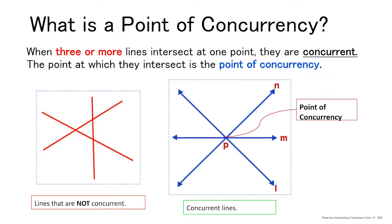A point of concurrency is simply when three or more lines intersect at a point — that means they are concurrent, and the point at which they intersect is the point of concurrency. In the first image, we don't have three lines that intersect — there's no point where all three lines meet, so these lines are not concurrent. But in the second image, all three lines intersect at the same point P, so these lines are considered concurrent.